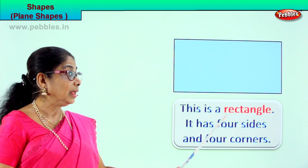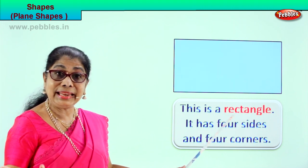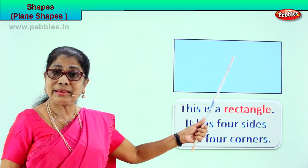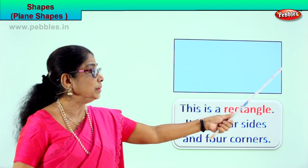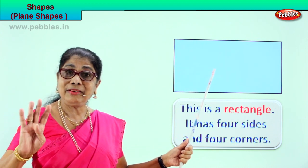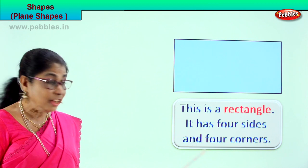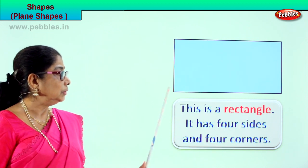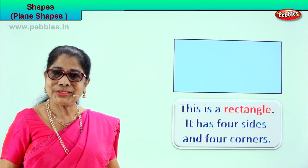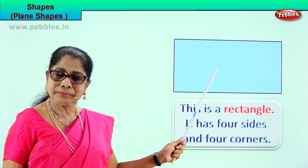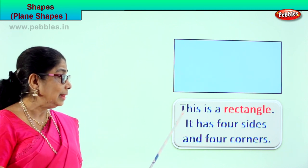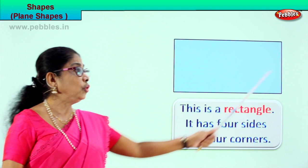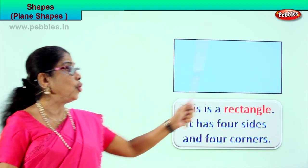Very good. Now let's see — not only rectangle, what does it have? It has four sides. How many sides does a rectangle have? Four sides: one, two, three, four. A rectangle has four sides and four corners — one, two, three, four. It has four sides and four corners.